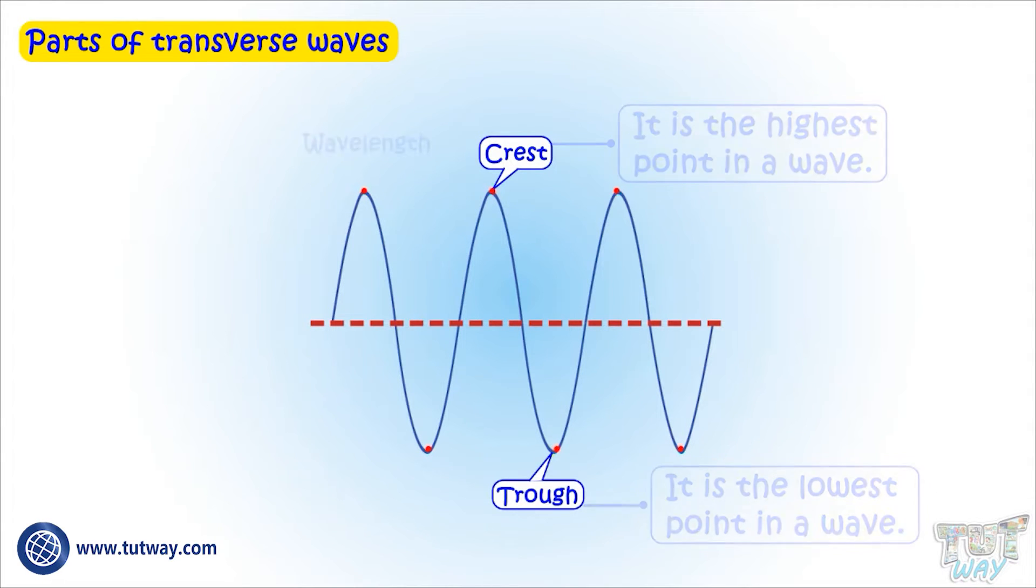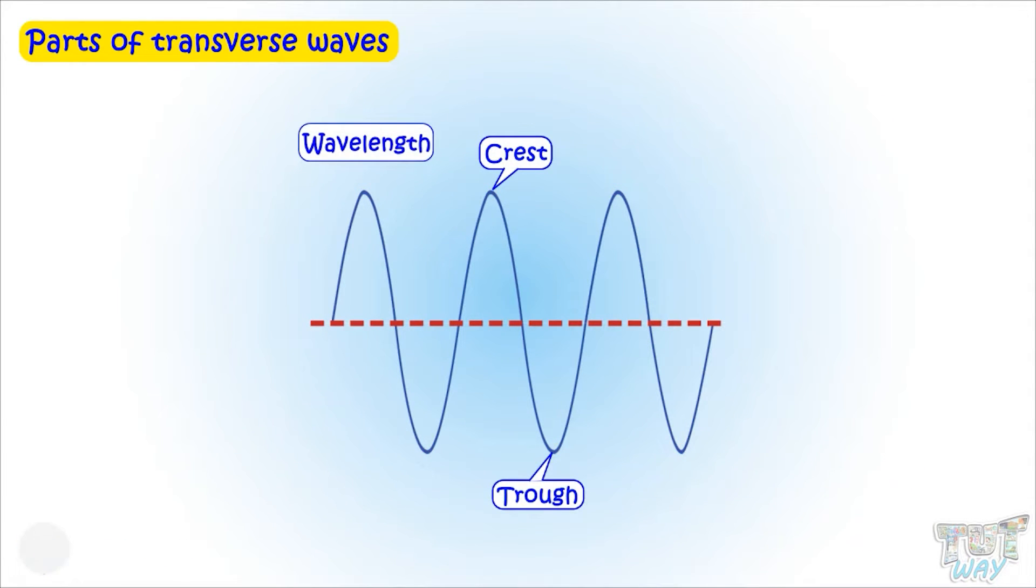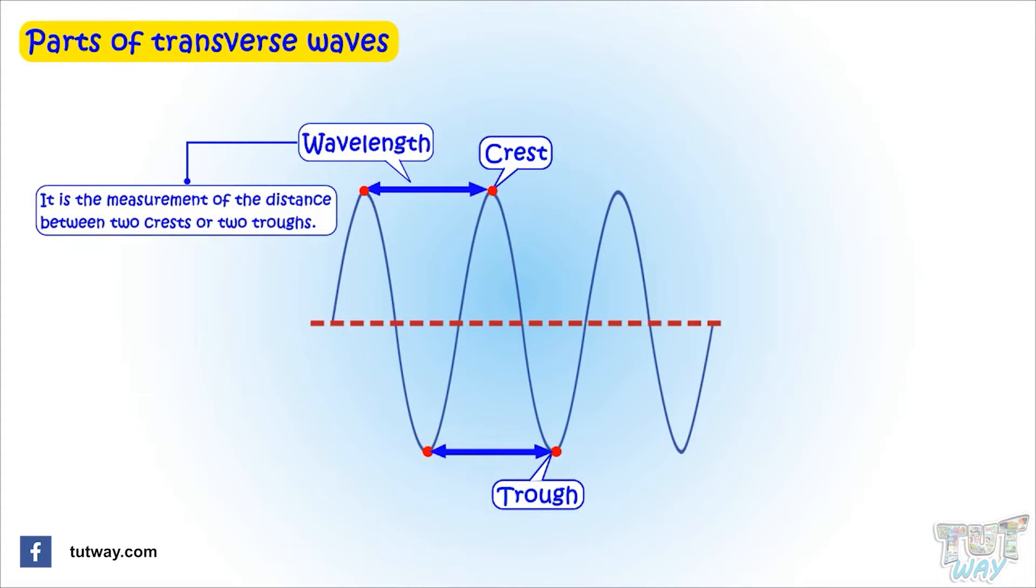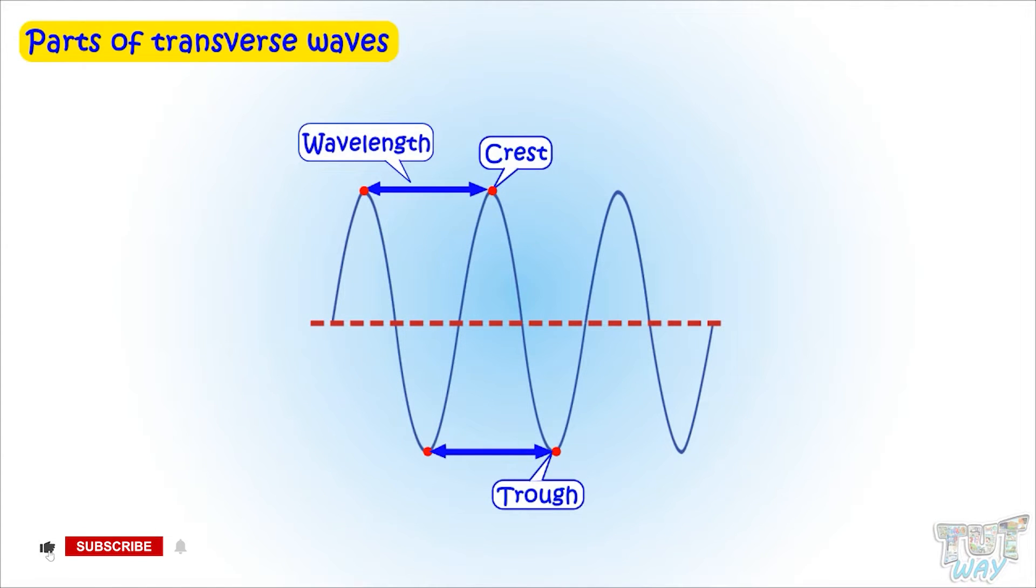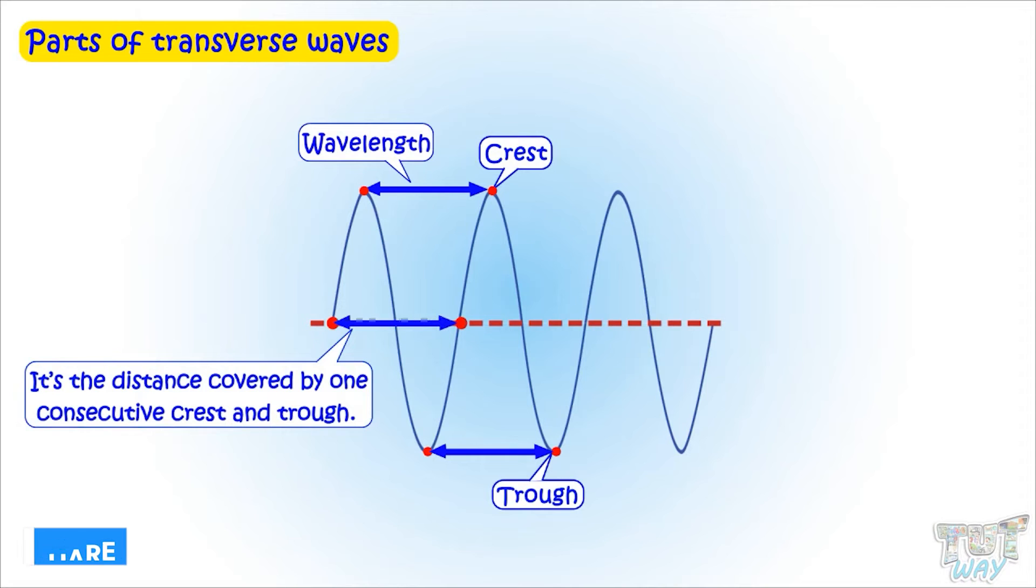Next is the wavelength of a transverse wave. It is the measurement of distance between two crests or two troughs. Like this, that is between two points. This is one wavelength. You can also measure it here, that is between two troughs. Wavelength is the distance covered by one consecutive crest and trough.